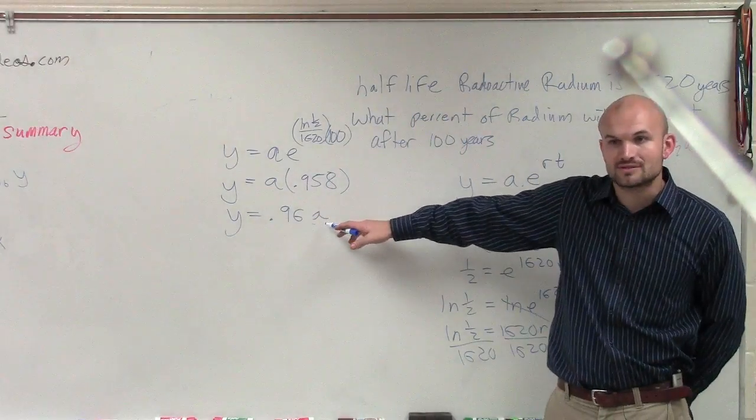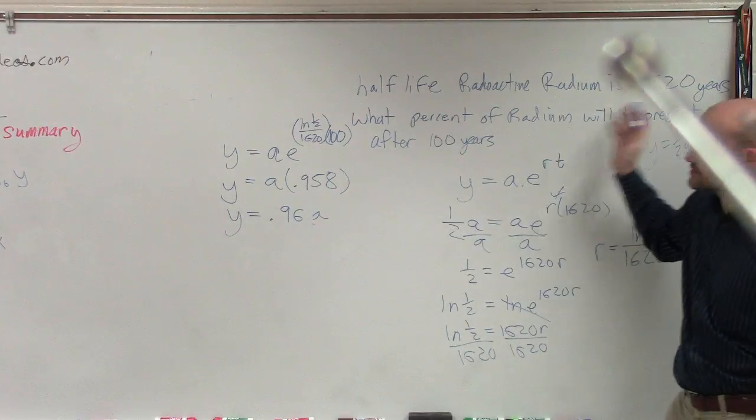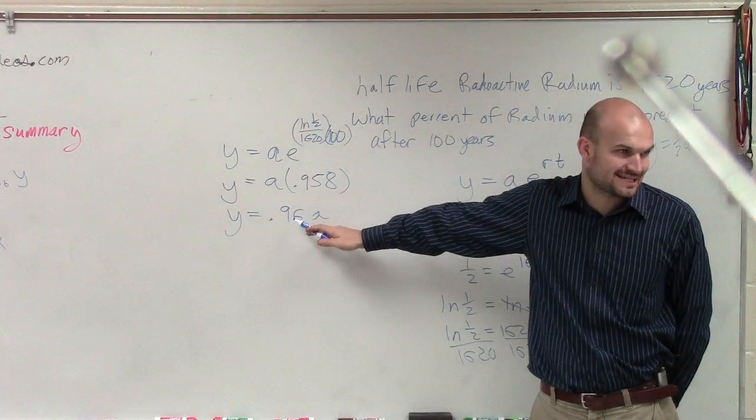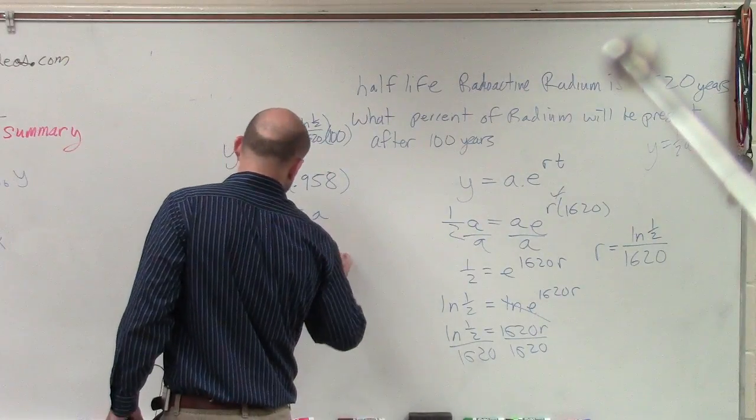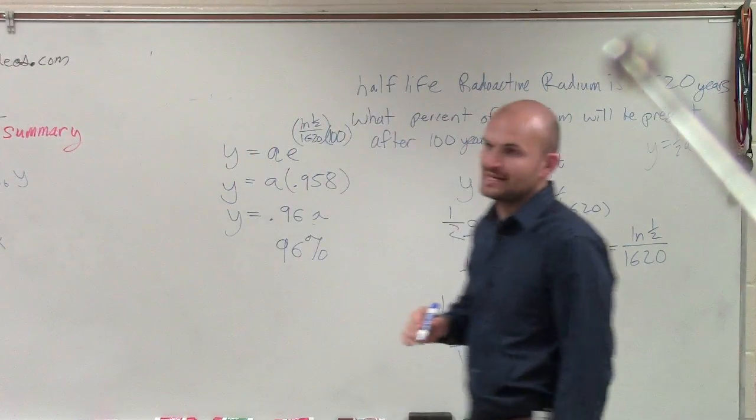So what that means is, if here's your initial amount, after 100 years, you're going to multiply it by 0.96. So therefore, after 100 years, you're going to have 96% of the radium left.